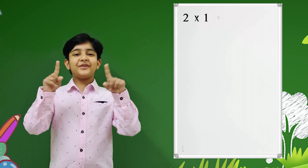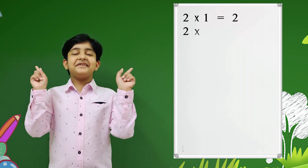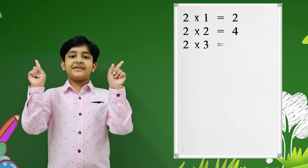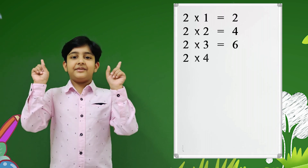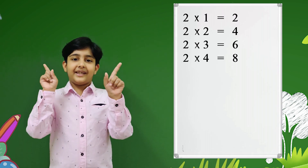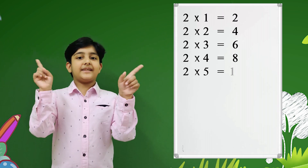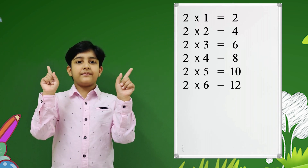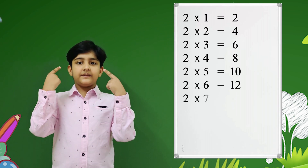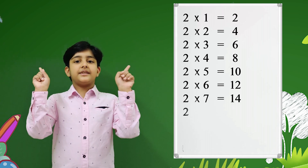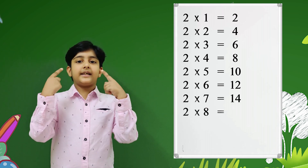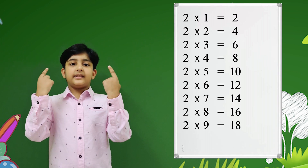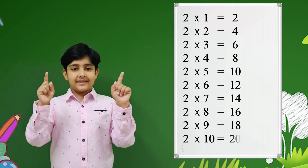Two ones are two, two twos are four, two threes are six, two fours are eight, two fives are ten, two sixes are twelve, two sevens are fourteen, two eights are sixteen, two nines are eighteen, two tens are twenty.